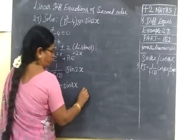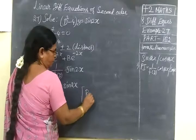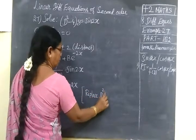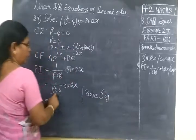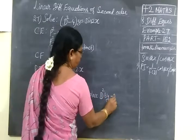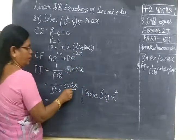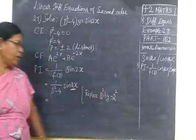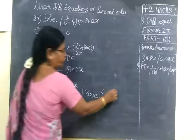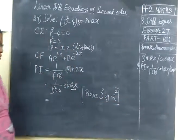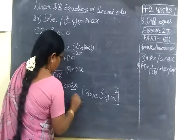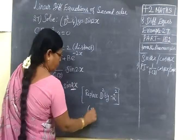Now we have to replace D square by minus 2 square. This is the method for this problem. You are replacing D square. This D square is 2 square.